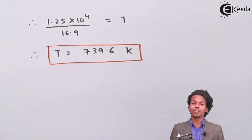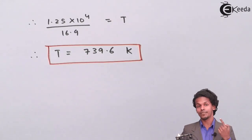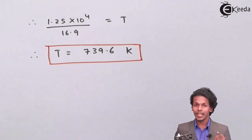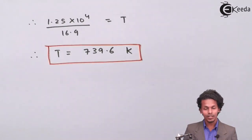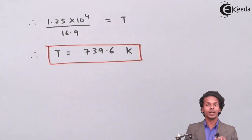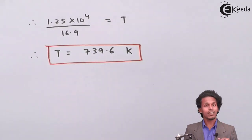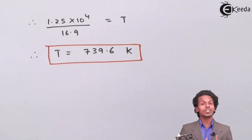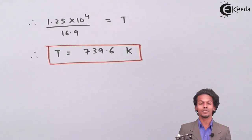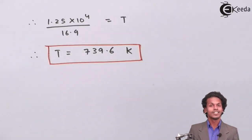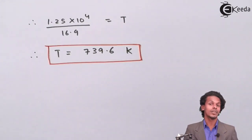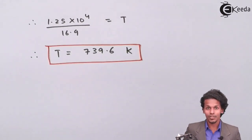So using this equation, we calculated the activation energy Ea, then the temperature T, using the rate constant K derived from the given half-life. It was a straightforward numerical. Thank you for watching — I hope you liked this video. Please share it with your friends and don't forget to subscribe.